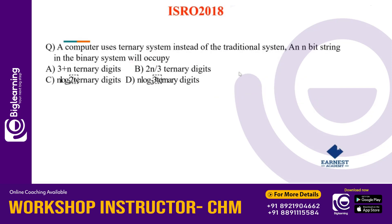A computer uses a ternary system instead of the traditional binary system. An n-bit string in the binary system will occupy how many digits in the ternary system? The options are: n log 2 to the base 3, or n log 3 to the base 2. The ternary system uses 3 symbols.